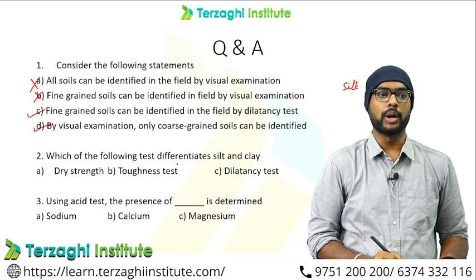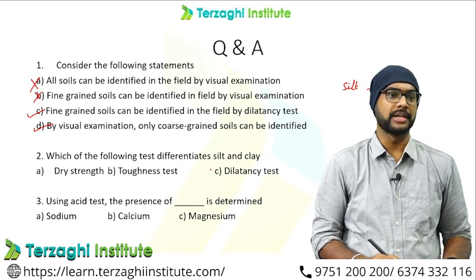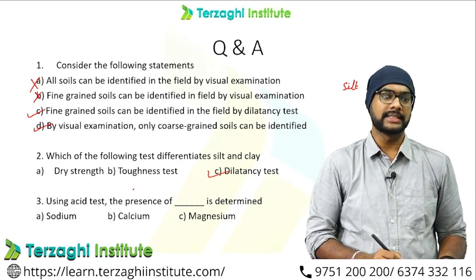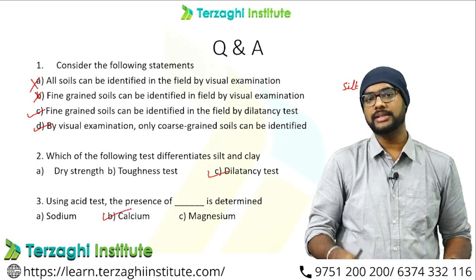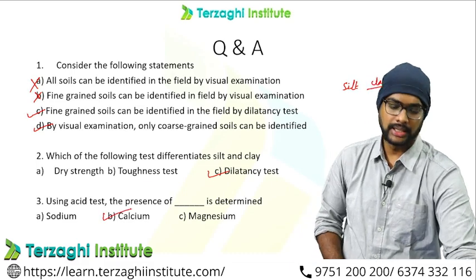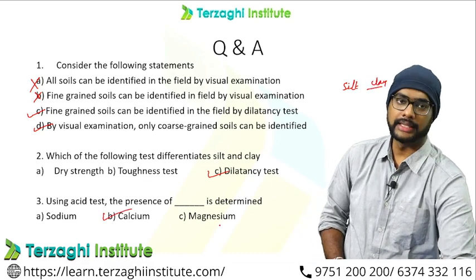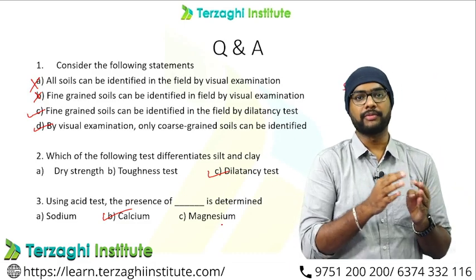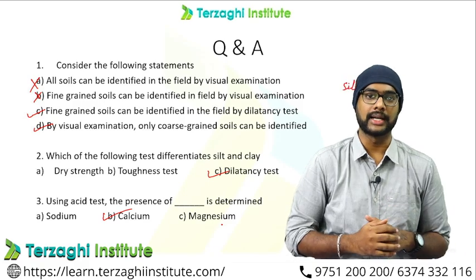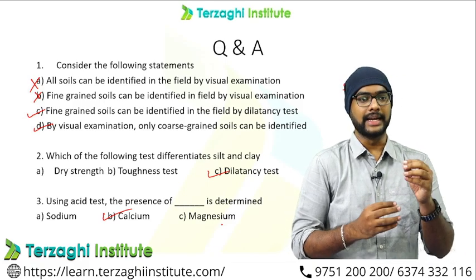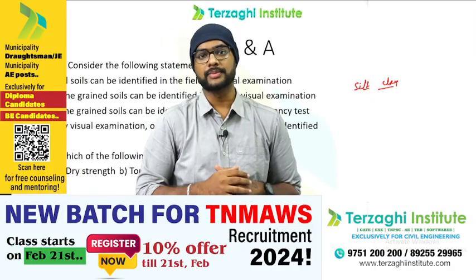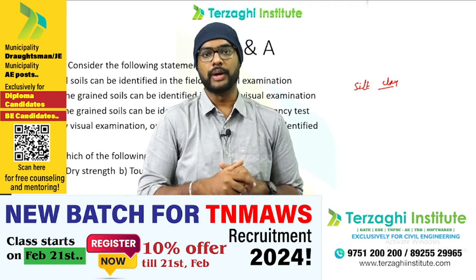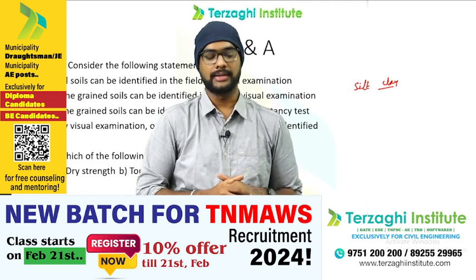Which of the following tests differentiate silts and clays? Dilatancy test. Then, using the acid test, the presence of calcium is determined. So in these questions, the topic — in our video, in our contact batch, the display is released here. Wherever media meet, click on the data. Bye-bye.